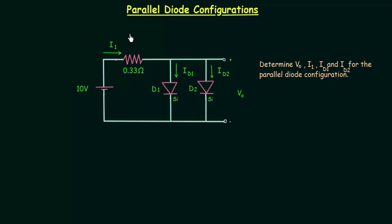In the last two lectures I solved series diode configurations. Now I will explain parallel diode configuration using this example.